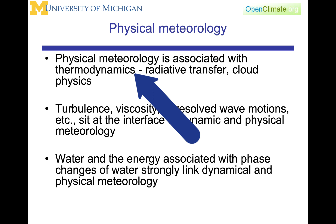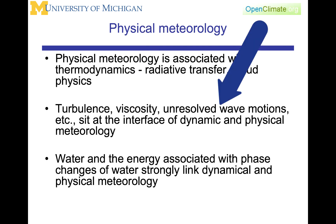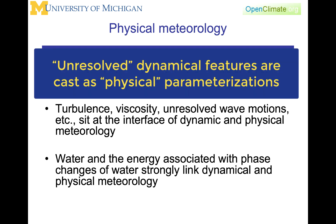Physical meteorology is associated with thermodynamics, radiative transfer, and cloud physics. There are dynamical features such as turbulence and viscosity and unresolved wave motions that sit at the interface of dynamic and physical meteorology. The way we often think of them — in trying to simulate the weather or simulate the climate — is that these dynamical features are cast as physical parameterizations.